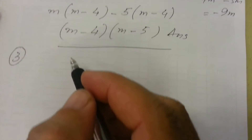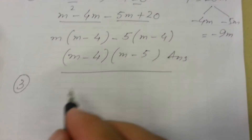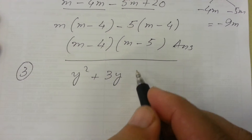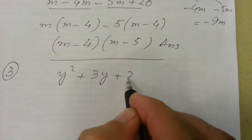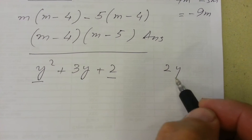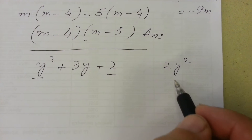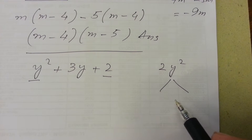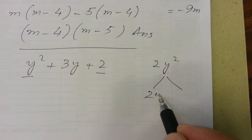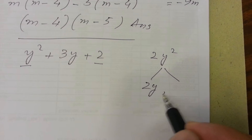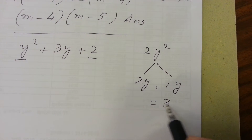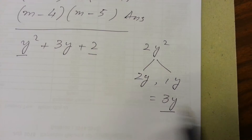Question 3: y squared plus 3y plus 2. The product of the first term and the last term is 2y squared. We will split the middle term into two numbers: 2y and 1y, because their sum is 3y and their product is 2y squared.